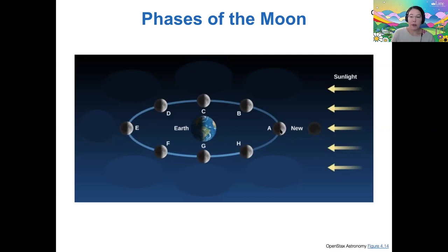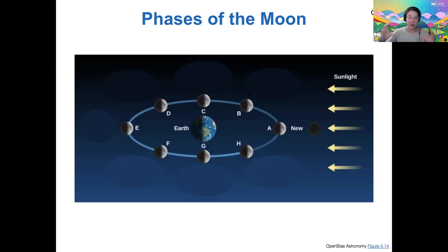As the moon orbits, around half of it is always illuminated by the sun — simply because that's what happens when you have one fixed-point light source and a sphere. Only half of it at any one time can be illuminated. But the part that we see varies.